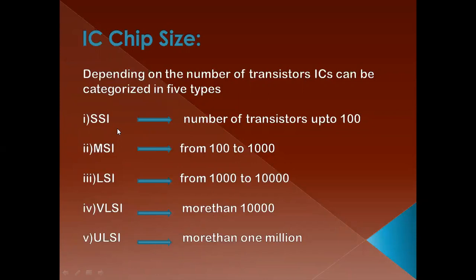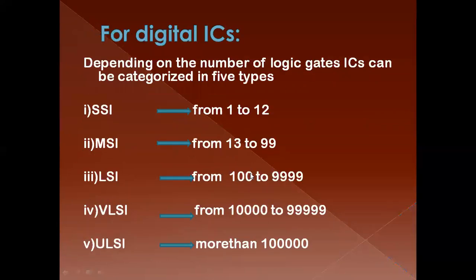In SSI, that is small scale integration, the number of transistors used is up to 100 — we can use 100 transistors per chip. In MSI, we can use transistors in between 100 to 1000. In LSI, the range is more than 10,000. In VLSI, the range is also more than 10,000. For ULSI, we can use more than 1 million transistors per chip. This classification represents analog ICs. We can also classify digital ICs in a similar manner.